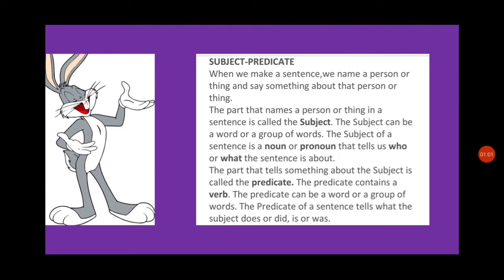The subject of a sentence can be a noun or a pronoun. A noun is the name of a person, place, thing, or animal. A pronoun is a word used in place of a noun — like he, she, it, they, we, you, us. So a subject can be a noun or a pronoun that tells us who or what the sentence is about.